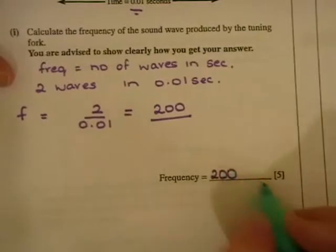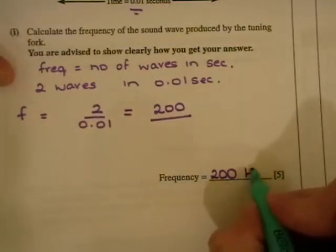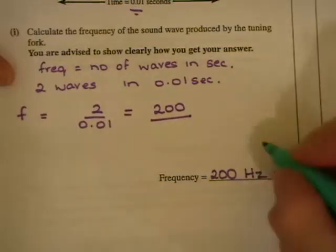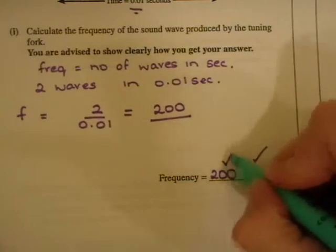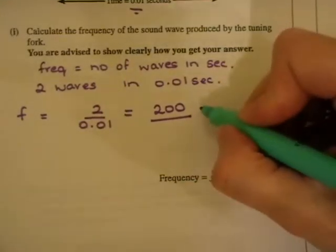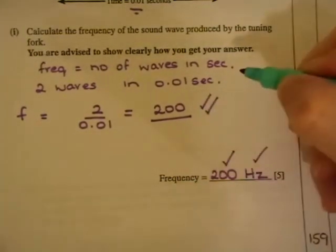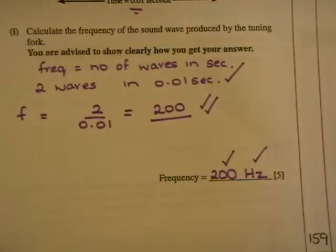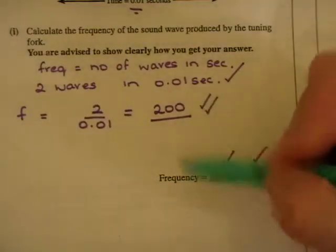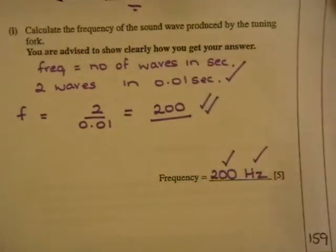Now, you can see here that there's no unit in here, and there's five marks going. So you must make sure you put in Hertz there. So your marks are one for your unit, one for 200, two for your calculation there, and one for stating that you have two complete waves in 0.01 seconds. So even if you couldn't go any further, you'd still get one mark for writing that down.